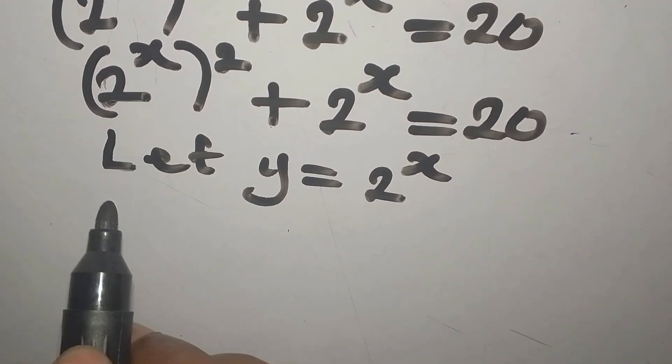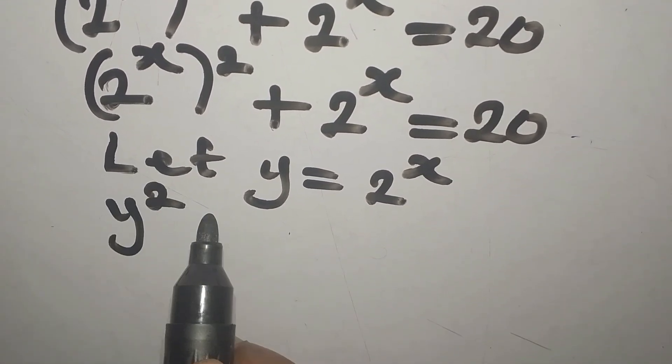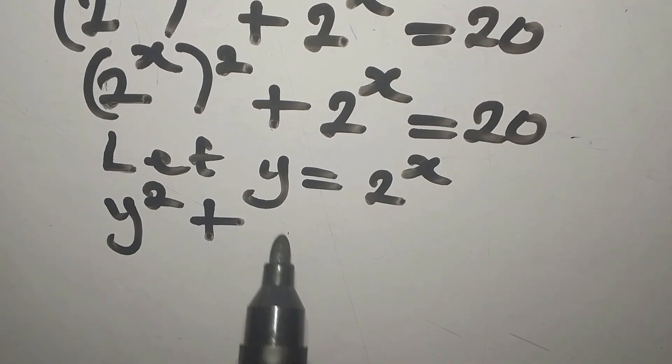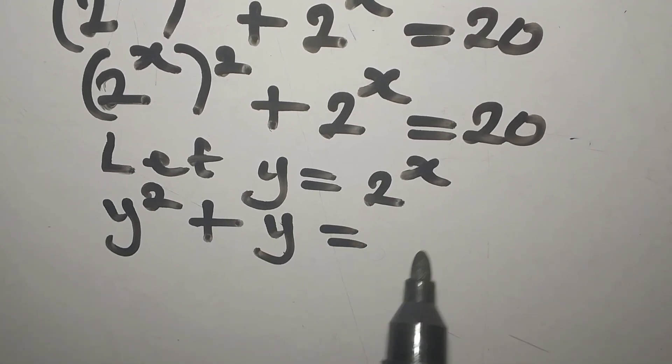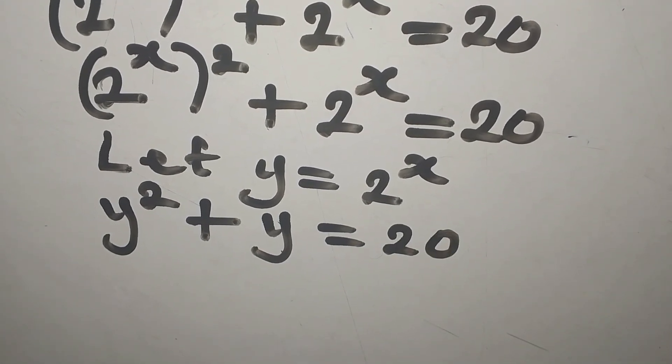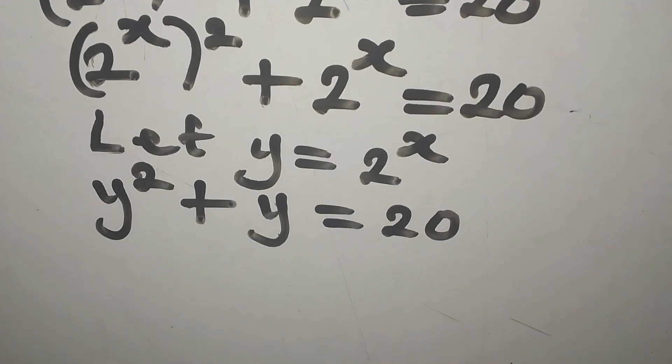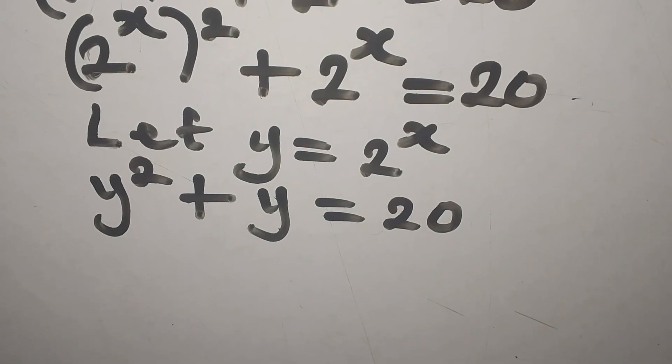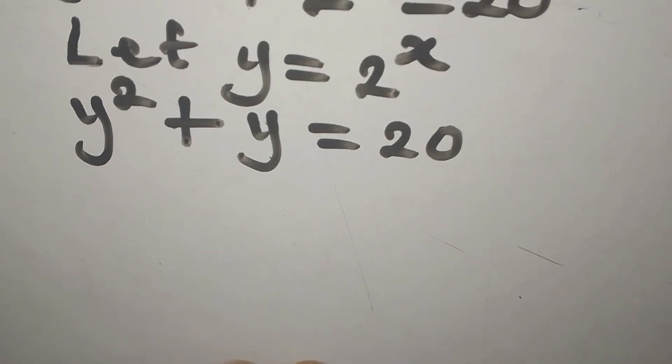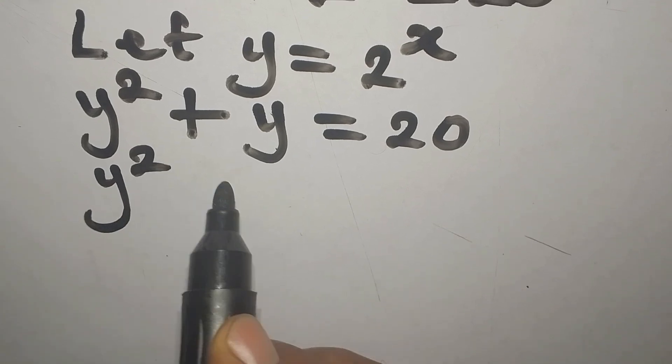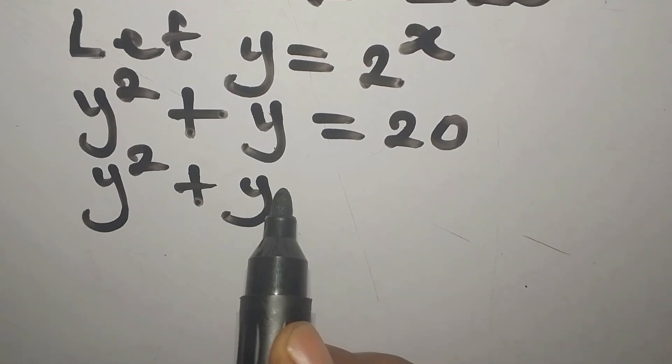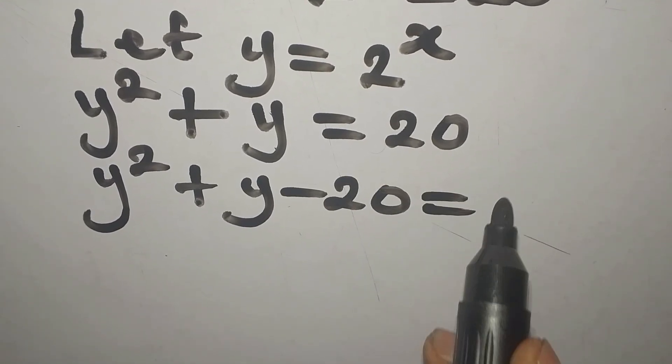Here now we're going to write y squared plus here we have 1y. Everything equals to 20. Let's bring 20 to the left as we have y squared plus y minus 20 equals 0.